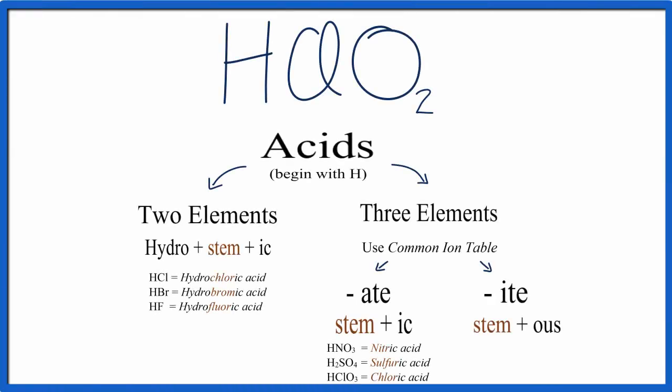To write the name for the acid HClO2, which is chlorous acid, we'll use this flowchart here and a common ion table.